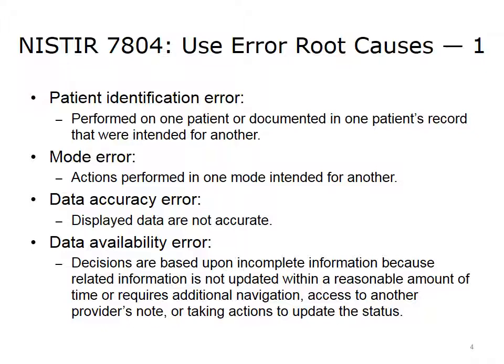The Use Error Root Cause model created several categories. Patient Identification Error: an action performed on one patient or documented in one patient's record that was intended for another. Mode Error: actions performed in one mode intended for another. Data Accuracy Error: displayed data are not accurate. Data Availability Error: decisions are based upon incomplete information because related information is not updated within a reasonable amount of time, or requires additional navigation, access to another provider's note, or taking actions to update the status.